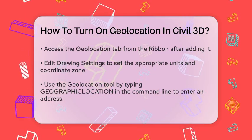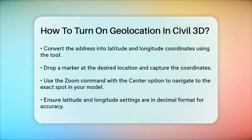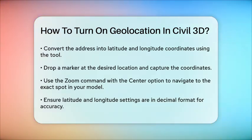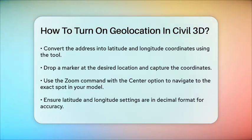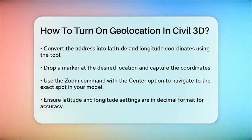Once you're at the correct location, you can drop a marker and capture the latitude and longitude coordinates. These coordinates can then be used to zoom into the exact spot in your Civil 3D model using the zoom command with the center option. Make sure your latitude and longitude settings are set to decimal format in your drawing settings.